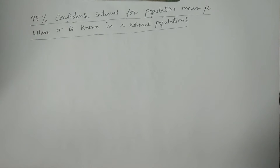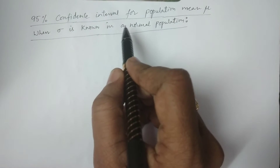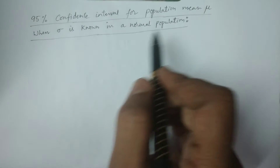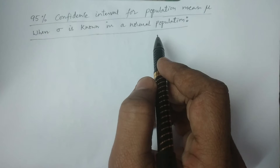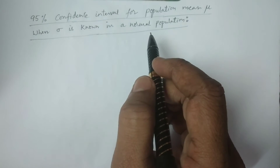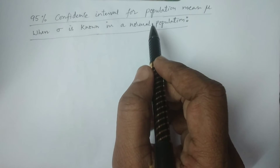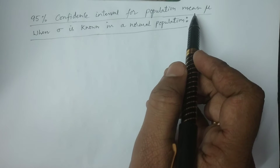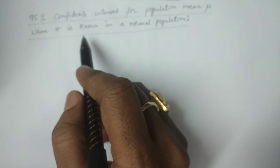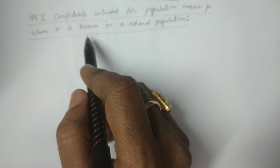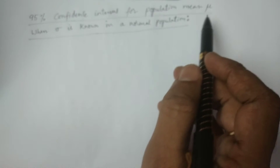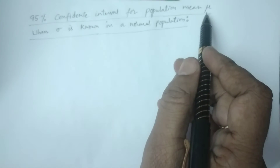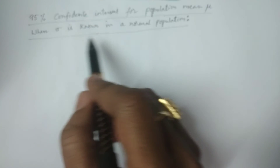Welcome to BSc Statistics students. In this lesson, I explain the 95% confidence interval for the population mean mu when sigma is known in a normal population. If I consider the normal population and want to estimate the population parameter — the population mean mu when sigma is known — then how to estimate a confidence interval, how to estimate the population mean mu in a normal population.